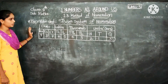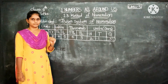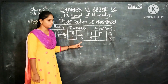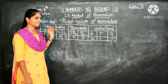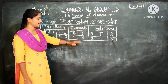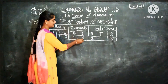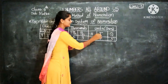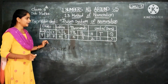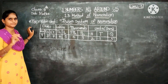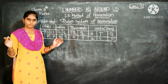Do you understand? Now I will take one example. I have a 4-digit number. Expanded form means 'Vistar Roop' — it means we open or expand the number. Because this is a 4-digit number, we can start from the Thousands place. The number is 3,213.